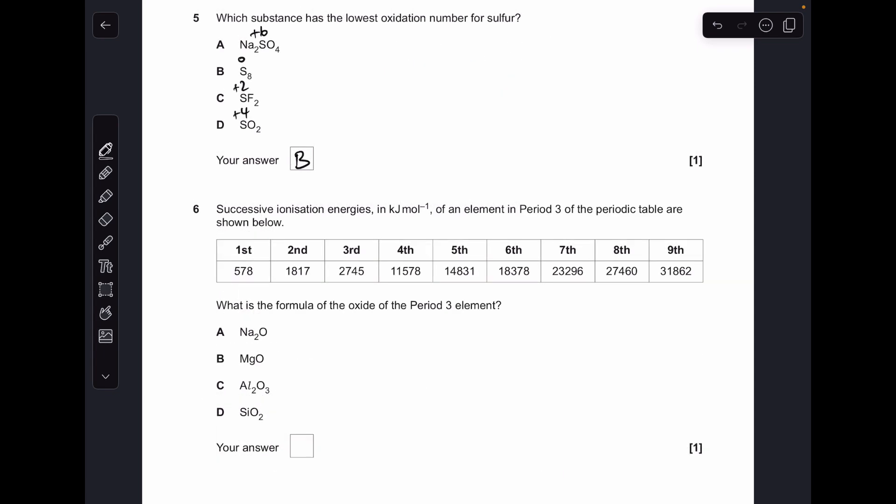Number six, we've just got to work out what group this element's in. We're looking for the first big jump up in ionization energy and you can see that occurs between the third and the fourth, so this element's in group three, which means it's got to be aluminium oxide, option C.